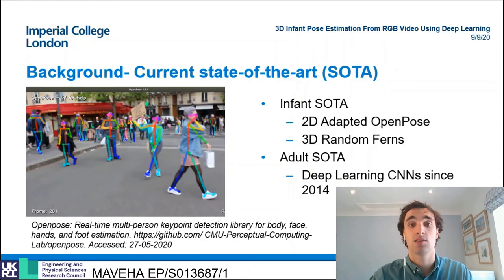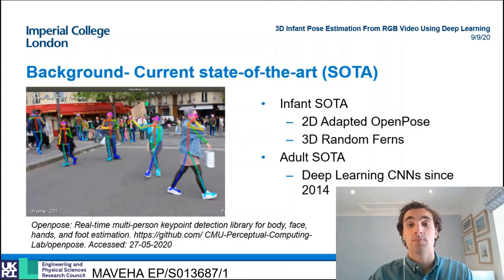The current state-of-the-art approaches in infant pose estimation are based either on classical methods such as random ferns or are empirically adapted deep learning models only trained on adult datasets.